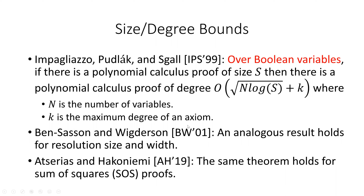So why is this interesting? Some important and very useful results in proof complexity are the following size-degree bounds for several proof systems. If there's a proof of relatively small size, then it can be transformed into a proof of relatively small width or degree. In particular, Impagliazzo, Pudlak, and Seagal showed that over Boolean variables, if there's a polynomial calculus proof of size s, then there's a polynomial calculus proof of degree roughly O(√(n log s)). Ben Sassone and Wigderson showed that the same applies for resolution size and width. And recently, Atzerias and Hakko Niemi showed that the same theorem holds for sum of squares proofs.